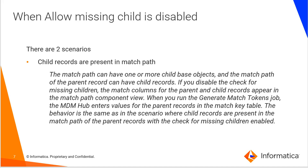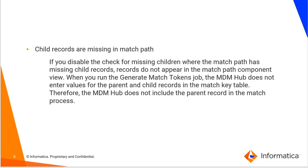The difference comes in the second scenario when child records are missing in the match path. If you disable the check for missing children where the match path has missing child records, records do not appear in the match path component view. When you run the generate match tokens job, the MDM hub does not enter values for the parent and child records in the match key table. Therefore, the MDM hub does not include the parent record in the match process for which the child records are missing.